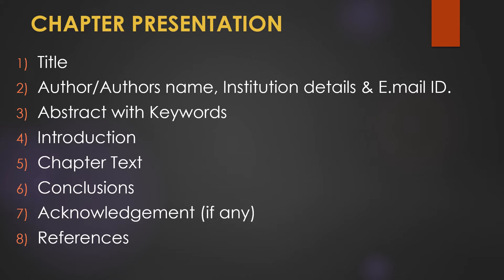The chapter presentation sequence is as follows: first, the title; second, the author name(s), institution details, and email ID; third, abstract with a minimum of four keywords; fourth, introduction; fifth, chapter body with subheadings; sixth, conclusions; seventh, acknowledgement (not necessary, but include if you wish to acknowledge any person); and finally, references.